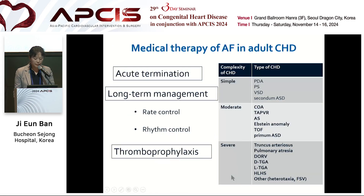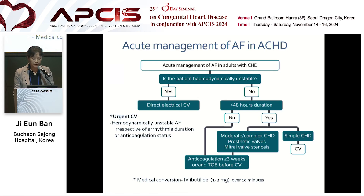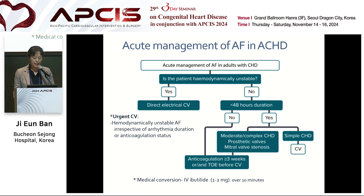Pharmacologic management of AF in congenital heart disease includes acute termination, rate and rhythm control, and prevention of thromboembolic complications. The right table shows classification of disease complexity. Cardioversion can be performed in acute cases. If AF persists more than 48 hours, at least three weeks of anticoagulation and/or transesophageal echo is necessary before cardioversion. Recently, intravenous ibutilide was used for conversion of atrial tachyarrhythmia.